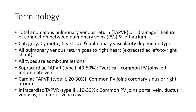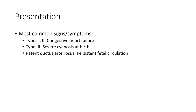Infradiaphragmatic TAPVR, Type 3: most commonly the pulmonary veins join the portal veins or inferior vena cava. Symptoms vary by type: Type 1 and Type 2 typically present with congestive heart failure. Type 3 presents with severe cyanosis, pulmonary hypertension, and persistent fetal circulation.